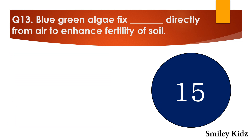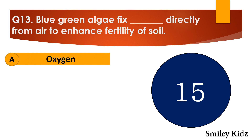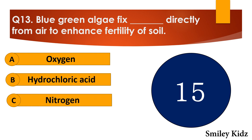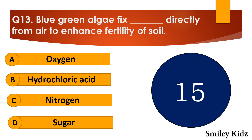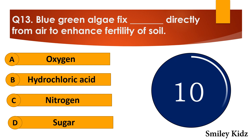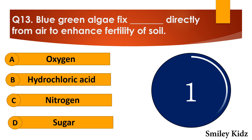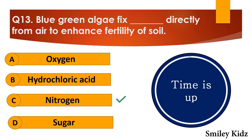Question number thirteen: Blue-green algae fixes dash directly from air to enhance fertility of soil. The options are: A. Oxygen, B. Hydrochloric acid, C. Nitrogen, or D. Sugar. Your time starts now. Your time is up and the right answer is option C — nitrogen. Blue-green algae fixes nitrogen directly from air to enhance fertility of soil.